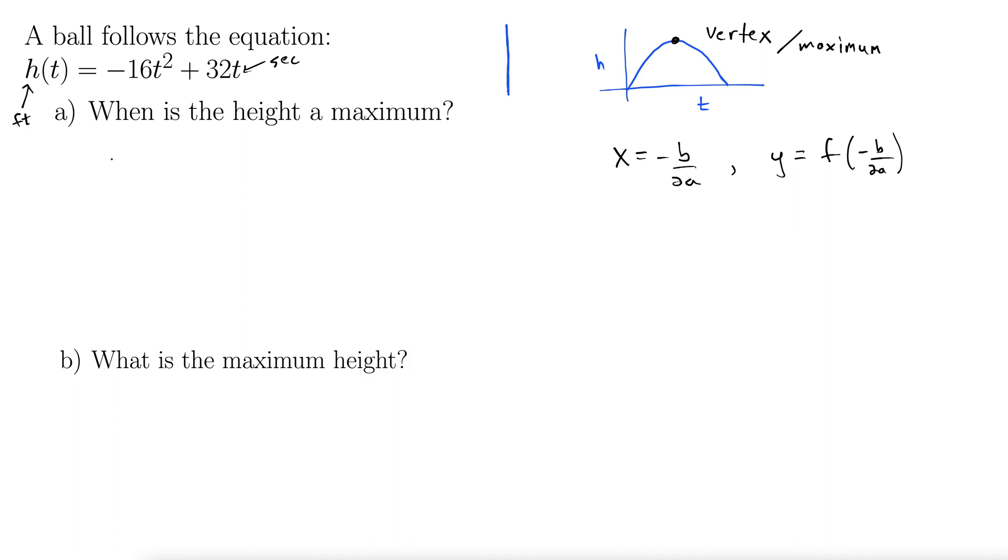So now instead of x equals negative b over 2a, our variable is t. So we have t equals negative b over 2a. Well, let's see here. So this negative 16 is our a, 32 is our b. So t is negative 32 over 2 times negative 16. Well, that's negative 32 divided by negative 32. So that's 1 second.